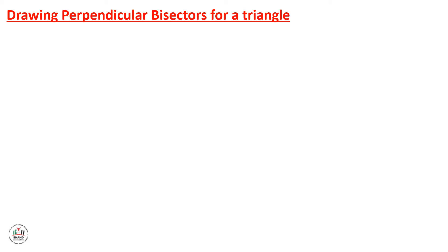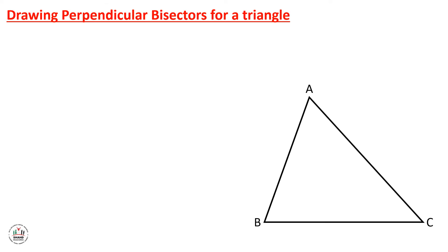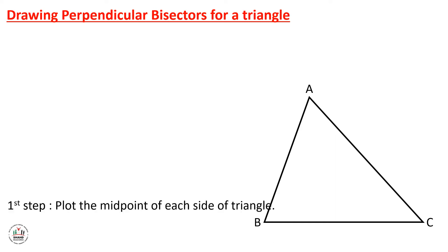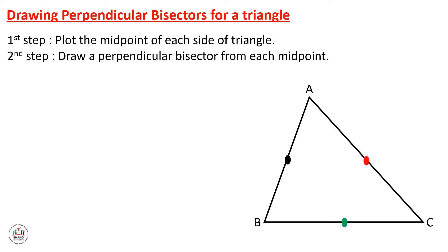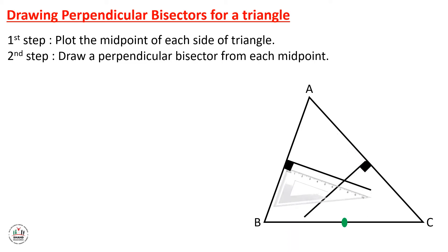To draw the three perpendicular bisectors for a triangle using the first method, we repeat the same steps for each side. First, we plot the midpoint of each side of the triangle. Second, we draw a perpendicular bisector from each midpoint using a set square. This gives us the first, second, and third perpendicular bisectors.